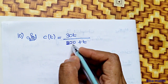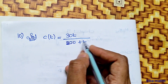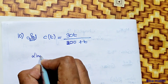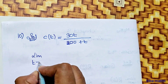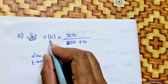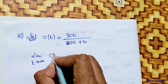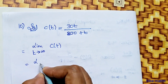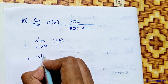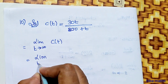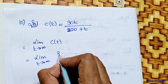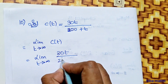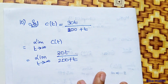The concentration function is c(t) = 30t divided by (200 plus t). We need to find the limit as t tends to infinity of c(t), which equals the limit as t tends to infinity of 30t divided by (200 plus t).